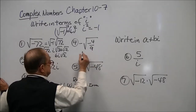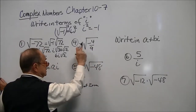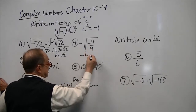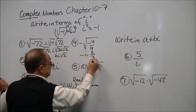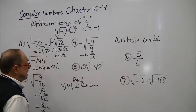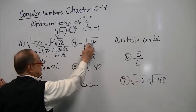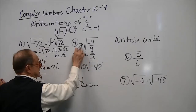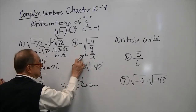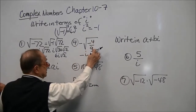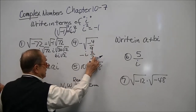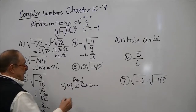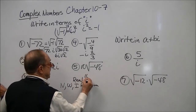Notice the negative sign is there, so that negative stays. This gives negative i, and then that's 2 thirds — so negative 2/3 i. The negative part of the radical comes out as i, the negative sign stays there, and we just take the square root of 4 and 9.